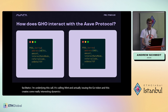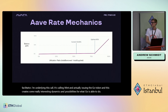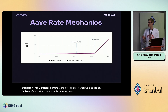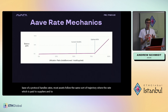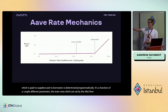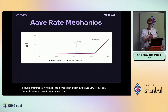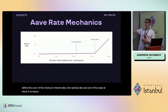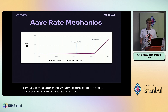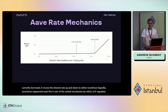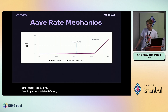The rate mechanics for most assets follow a standard trajectory: the rate paid to suppliers and borrowers is determined programmatically as a function of parameters set by the Aave DAO — the minimum interest rate, the optimal rate, and the slope at which it increases. Based on the utilization ratio (the percentage of the asset currently borrowed), the interest rate moves up or down to either incentivize liquidity or incentivize repayments.